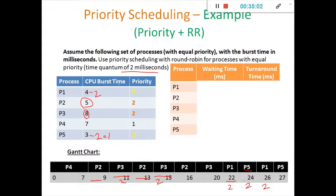So in this fashion you can make use of priority and round robin scheduling to complete the execution of processes that have the same priority. Now let us look into the waiting time and turnaround time of each process. For process P1, it has started only after the 20th millisecond, so its waiting time is 20 milliseconds. Its turnaround time is 26 milliseconds — only at the 26th millisecond P1 has completed its execution.